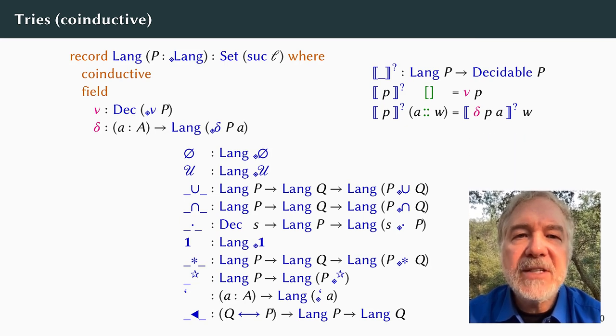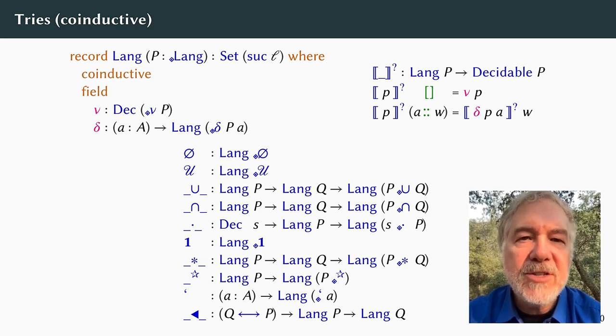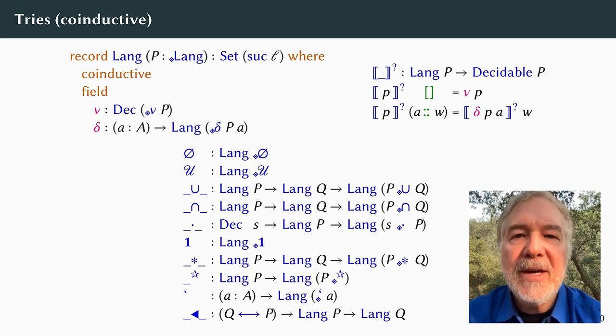Applying the second strategy to languages leads instead to a co-inductive type of tries, which is an exact functional dual to the inductive structure of regular expressions. The language operations are now defined functions instead of constructors, while nu and delta are now selectors instead of defined functions. Again, correctness of parsing is guaranteed by the types, so any definitions that type-check will suffice.